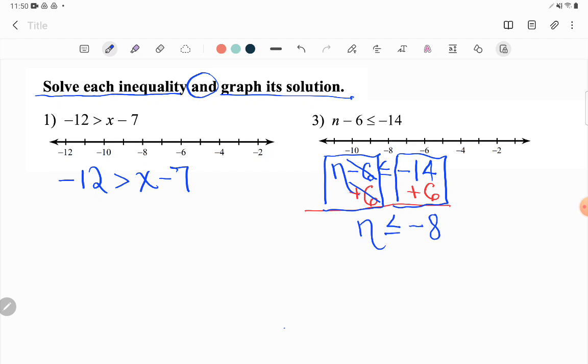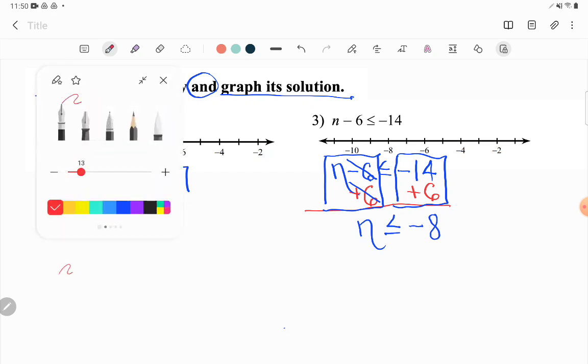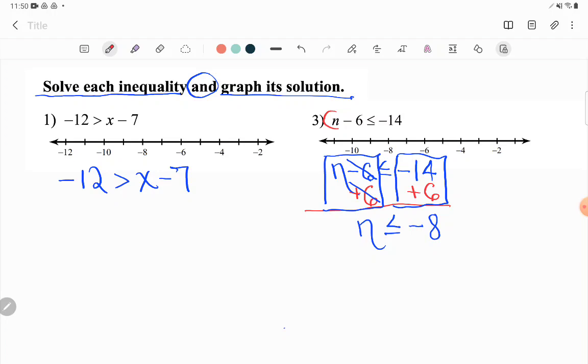So on number 1, I have the inequality negative 12 is greater than x minus 7. And once again, to solve this, I need to get my letter alone. So my goal starts the same. But interestingly enough, my letter this time, instead of being on the left hand side of the inequality symbol, is on the right hand side of the inequality symbol. And it doesn't really change what I'm doing. It just kind of changes the direction I'm moving. Because my goal is for the letter to be by itself, I'm going to have to start here, getting rid of this subtract 7 by doing the opposite again, adding 7. And you say, can I do that? And I'm like, you can do whatever you want, as long as you do it to both sides. Make sure you make it all the way across that inequality symbol. Do the same thing there.